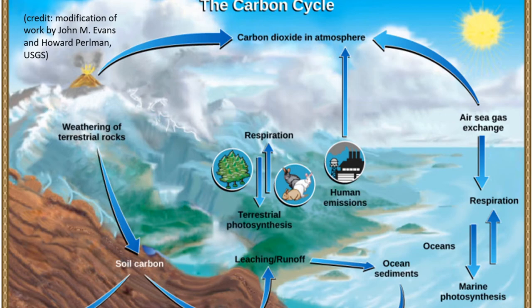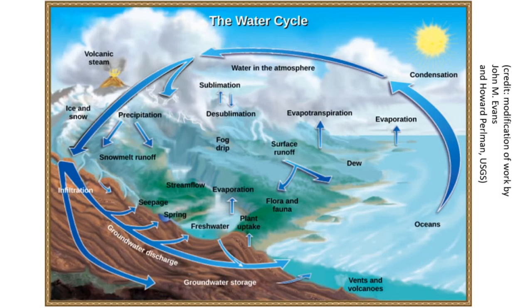The water cycle: water from the land and oceans enters the atmosphere by evaporation or sublimation, where it condenses into clouds and falls as rain or snow. Precipitated water may enter freshwater bodies or infiltrate the soil. The cycle is complete when surface or groundwater re-enters the ocean.